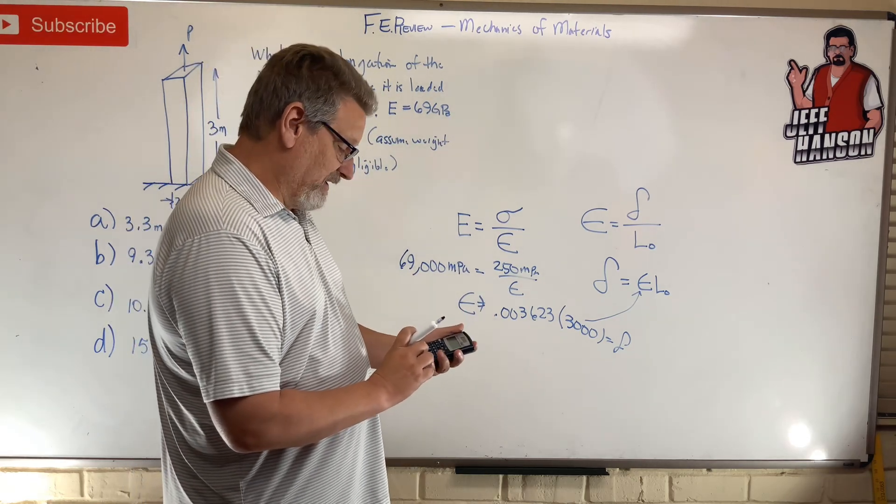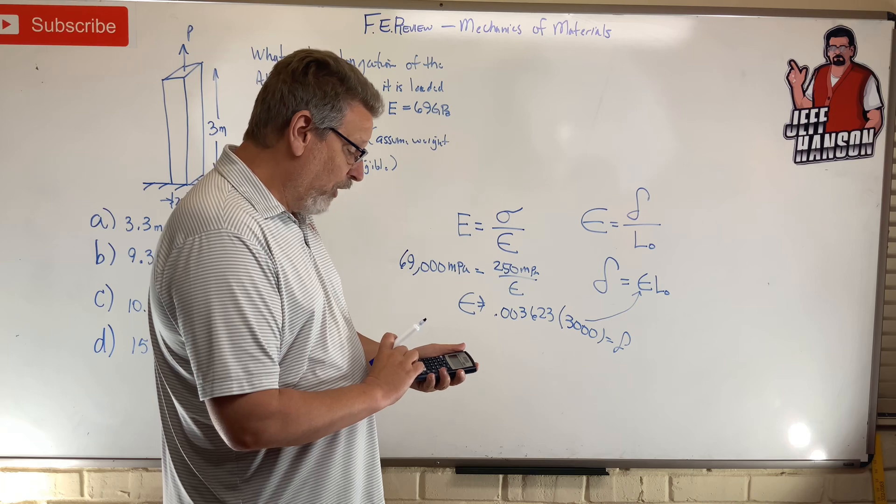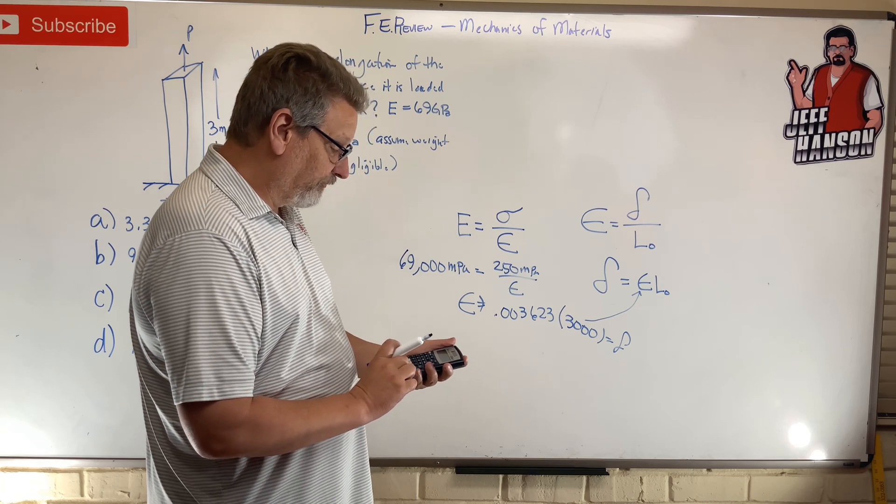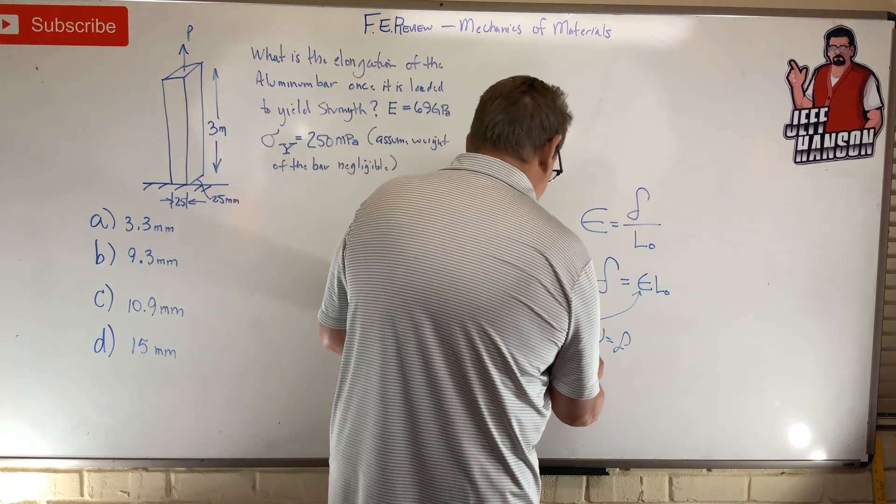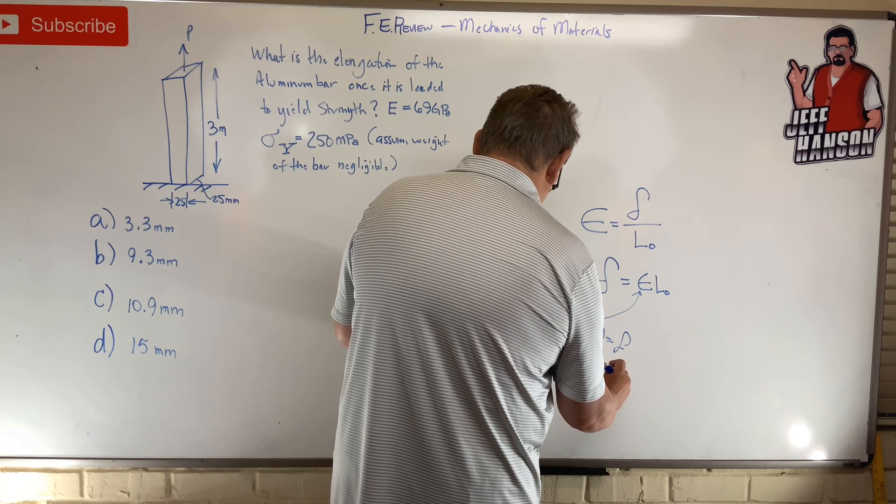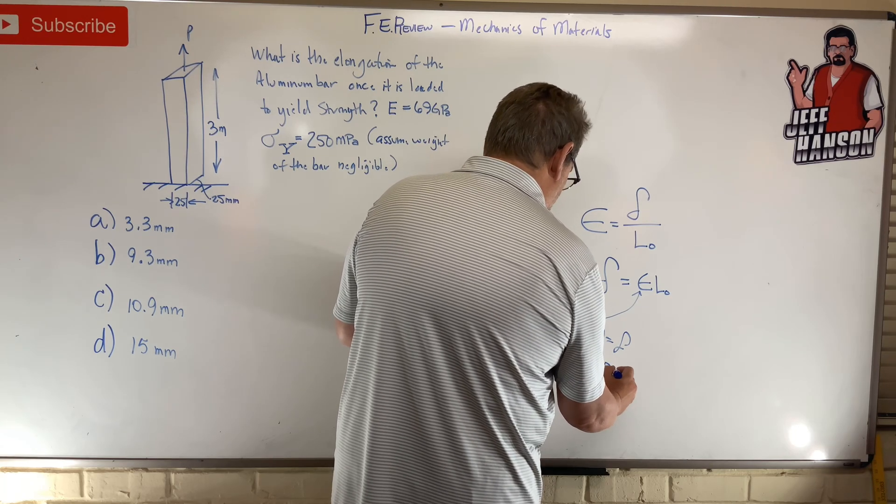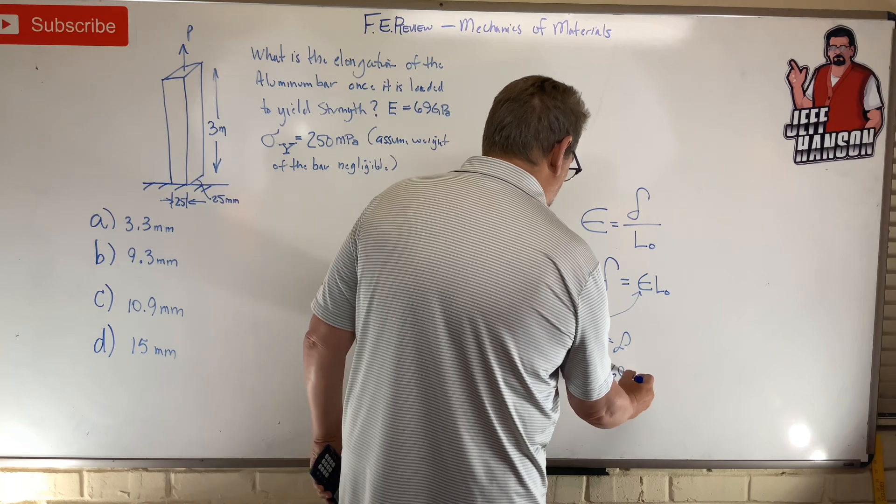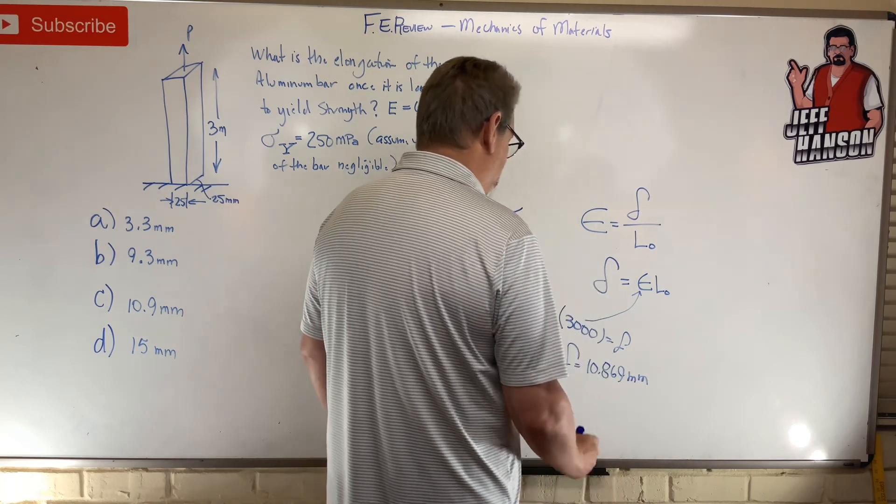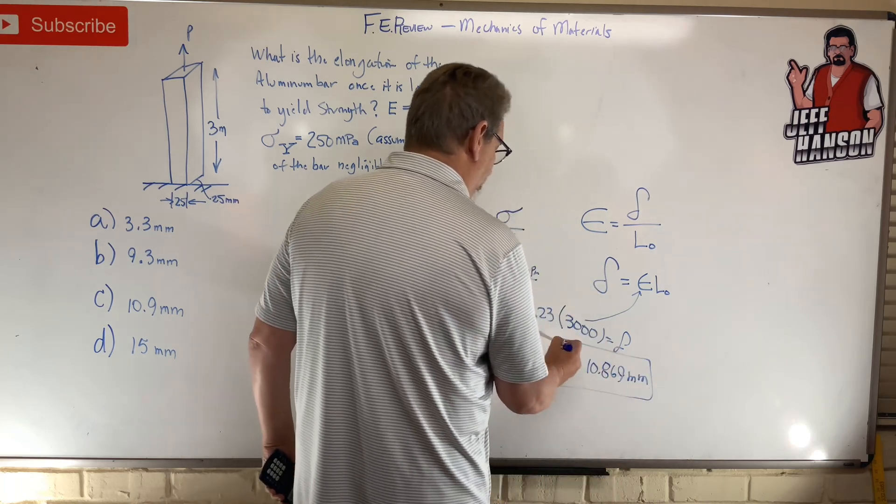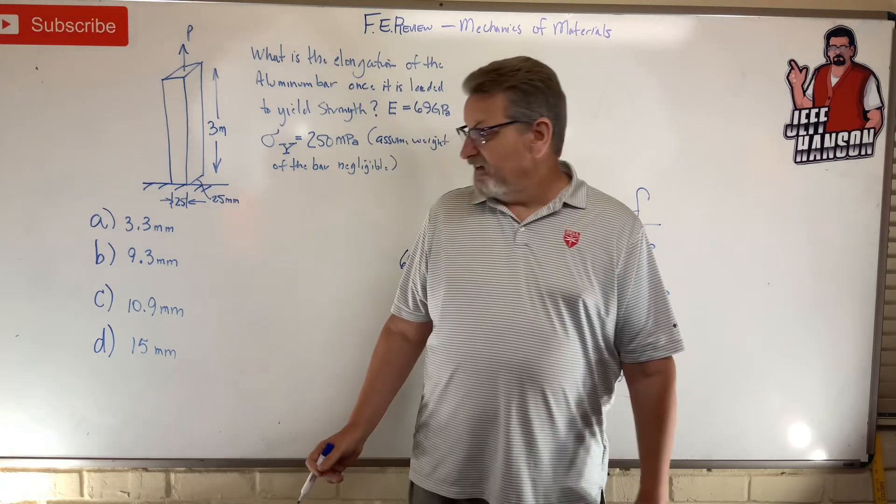So what's in my calculator right now? Times three thousand equals. Delta equals 10.869 millimeters. Okay, that's what I get. Is it over there? 10.869? Oh, I'd call that 10.9 all day long, right?